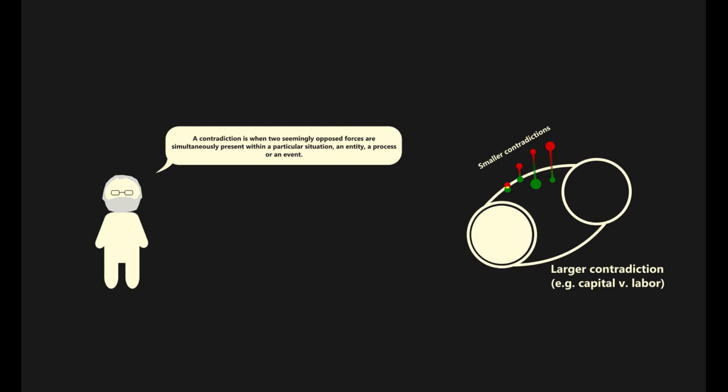Contradictions are interconnected across various planes and spheres. Some contradictions are shaped and defined by larger contradictions. Other contradictions are connected to each other through common mechanisms, elements, or origins.